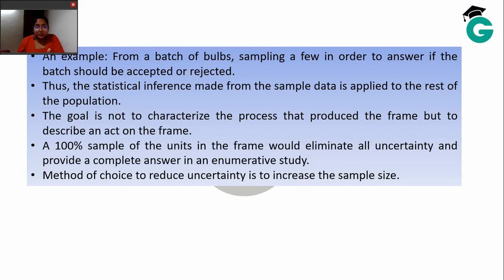You have a well-defined sampling frame which is samples from that particular batch of bulbs. You have the well-defined population which is that entire batch, and the goal is not to characterize how the sample is being made. The goal is to answer a question based upon a specific sample and a specific population. The statistical inference made from the sample data is applied to the rest of the population.